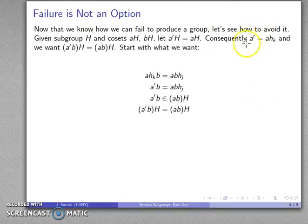Now I know that a' equals aHk, so I can drop that in: aHkb equals abHj. And so now I have this, and because this is a group I can multiply by the inverse of a, that drops out: Hkb equals bHj. And this seems to be a good place to start. If I have this, then I get this.